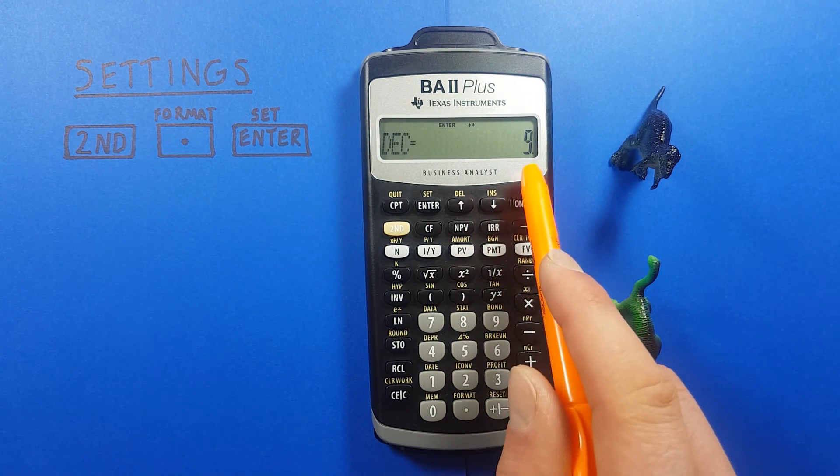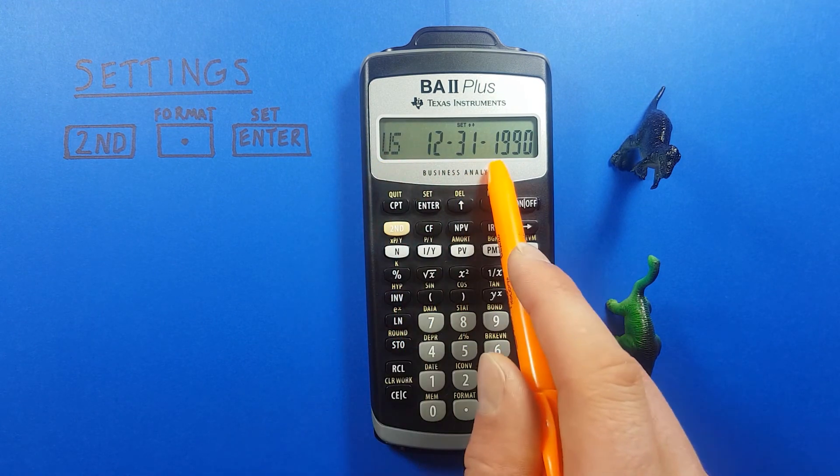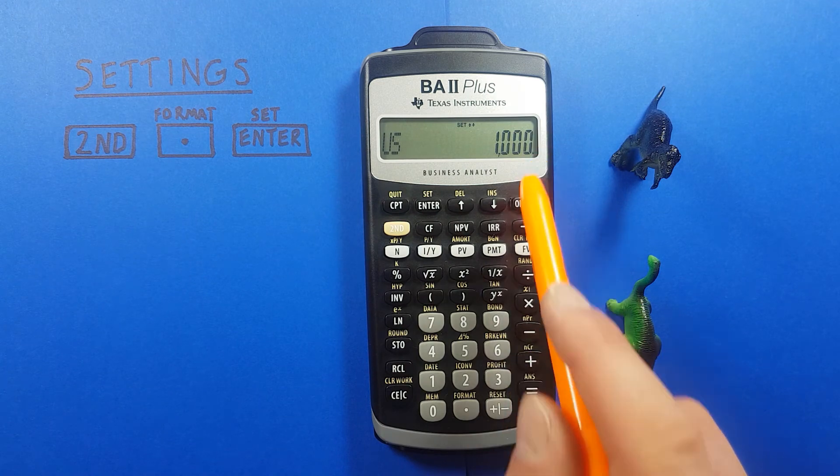If you go down again you're back to decimals, degrees, US date, and the US decimal point.